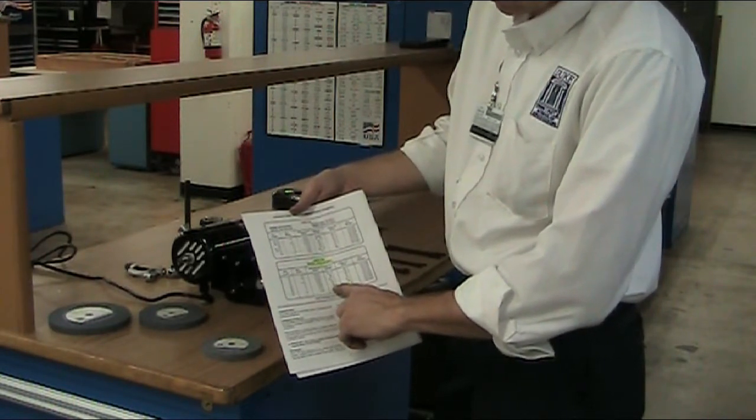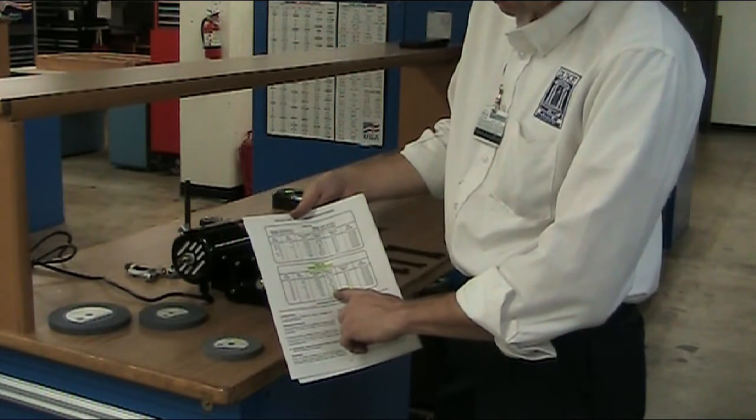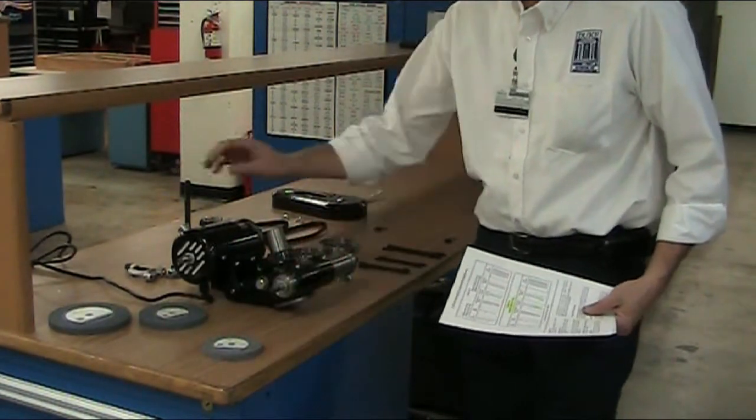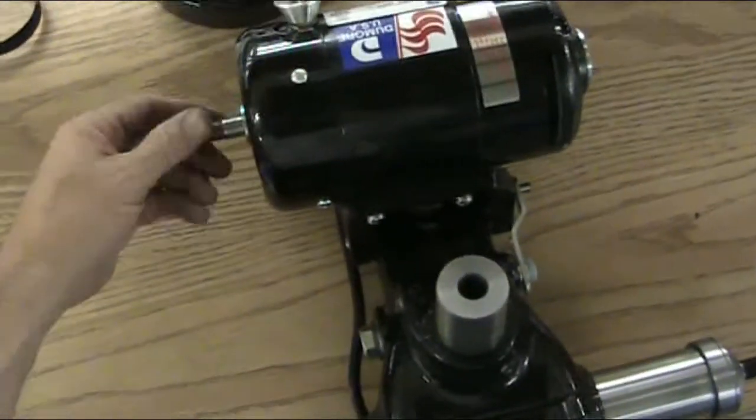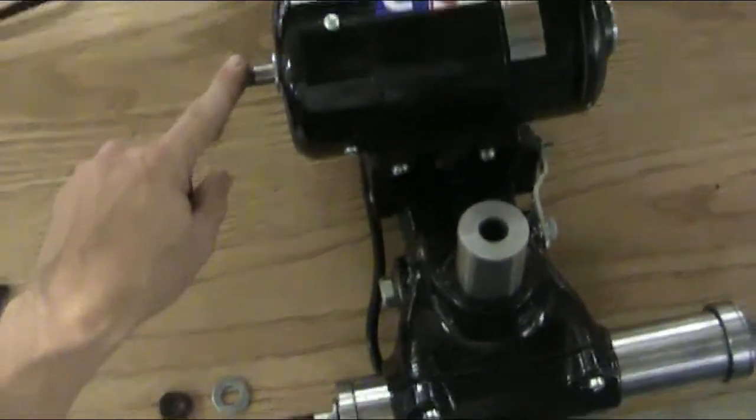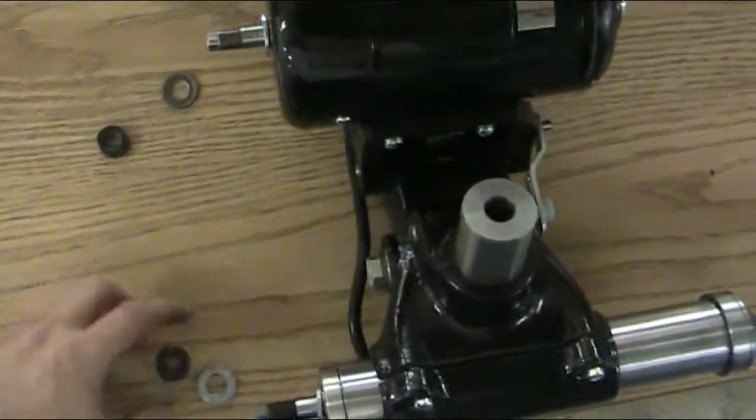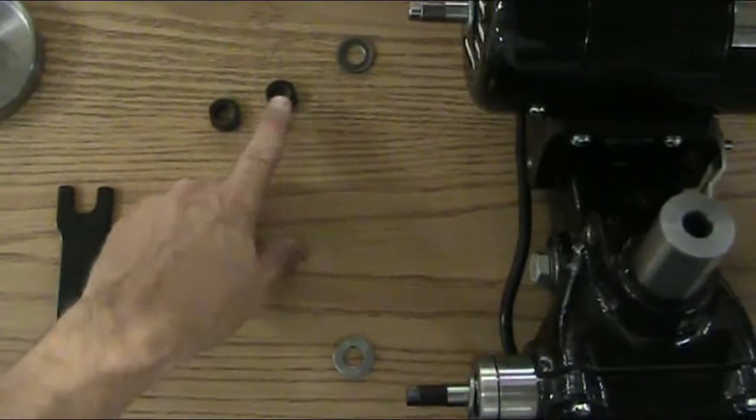You want to put a number 3 pulley on the spindle. Now remember, this is the spindle, and this is the motor. Always remember that the motor spindle is left hand. It's a special nut. They look identical to the other nuts, identical.